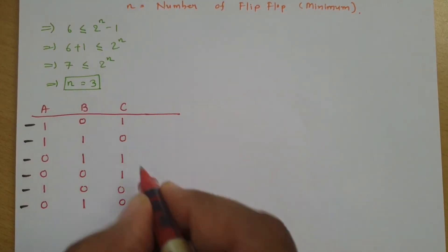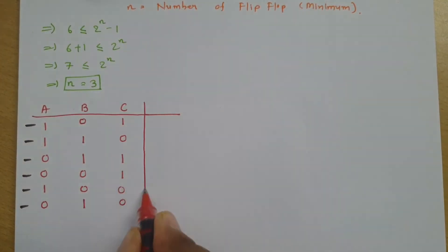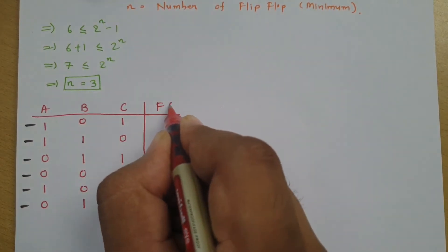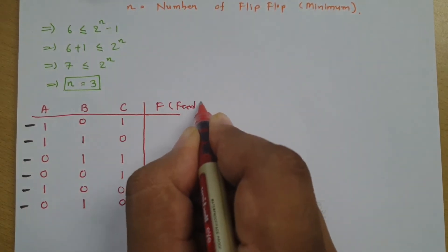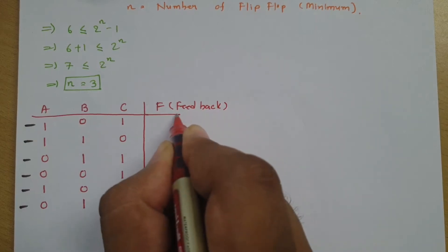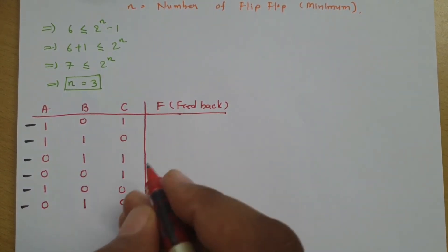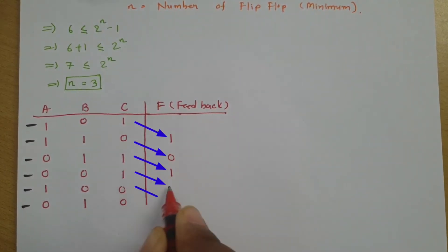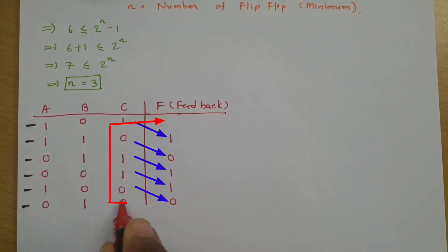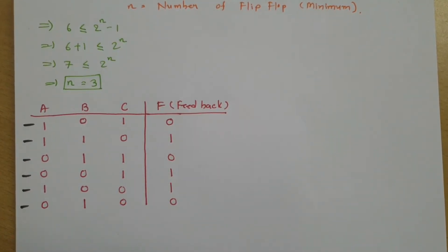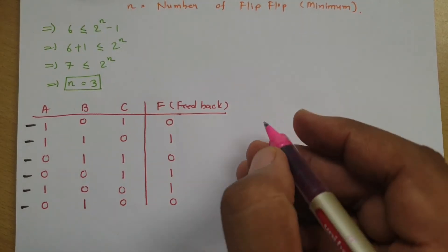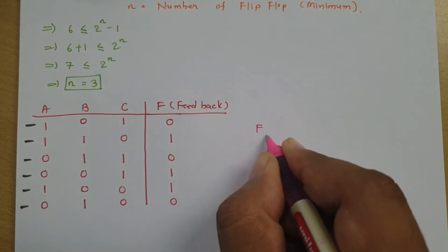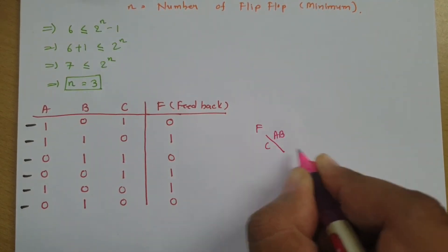Since these 3 flip-flops are sufficient, we need to determine the resultant feedback. The feedback is the shifted version of the last flip-flop output. So the feedback f has inputs a, b, and c, which we now need to solve.